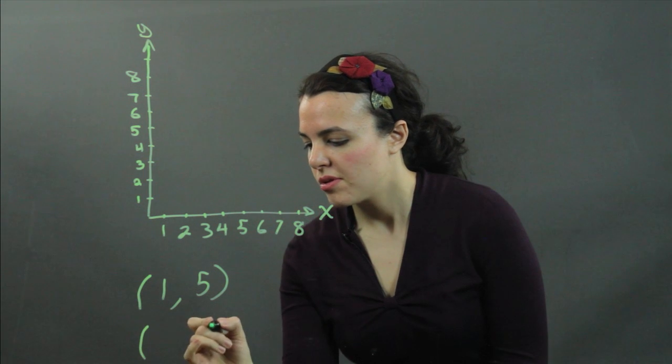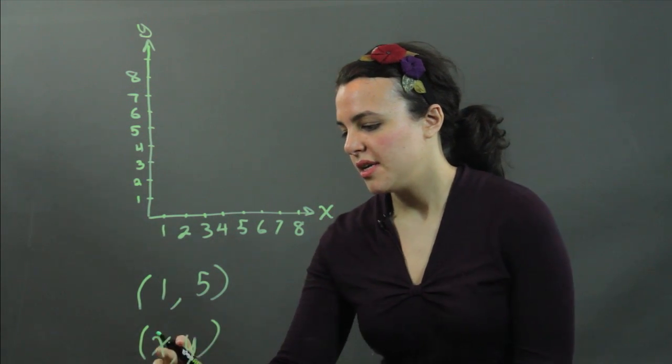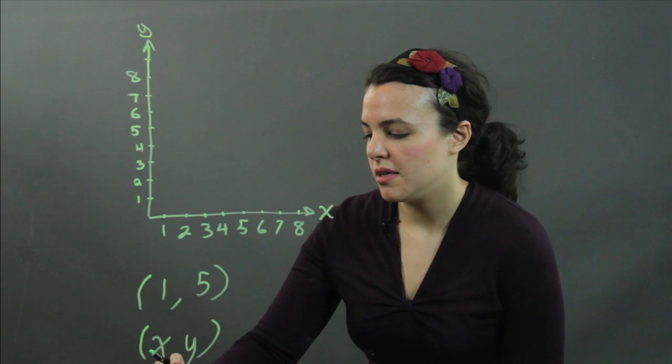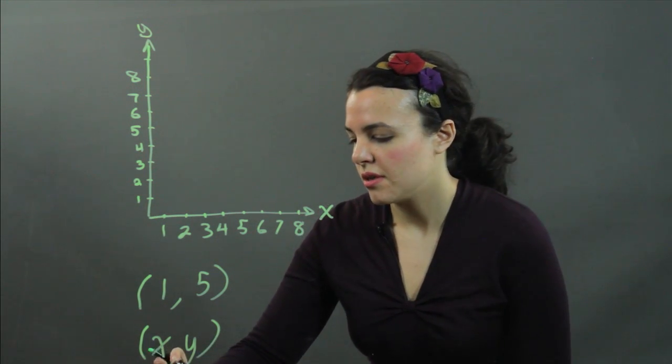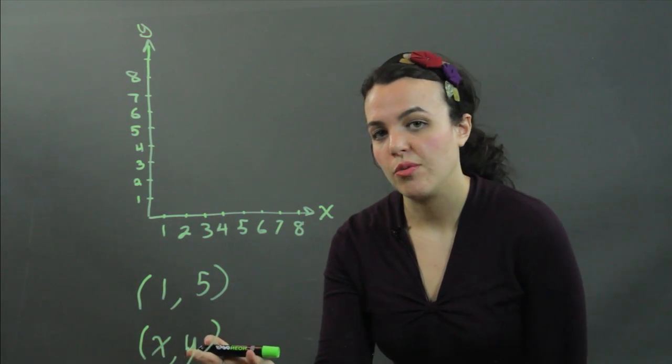The form of a coordinate pair is x, y, meaning this number here is on the x. This number here shows how high you are on the y-axis.